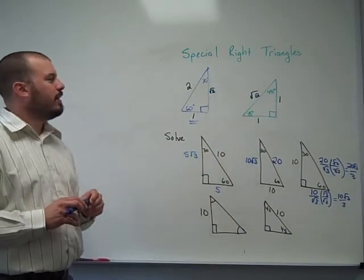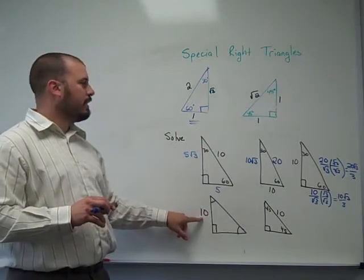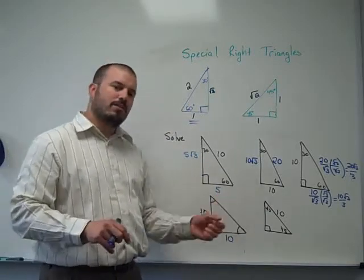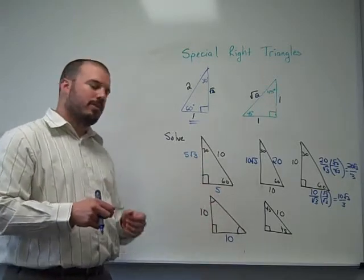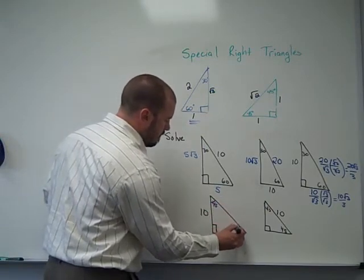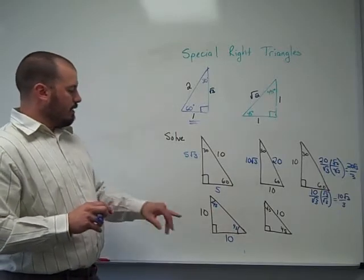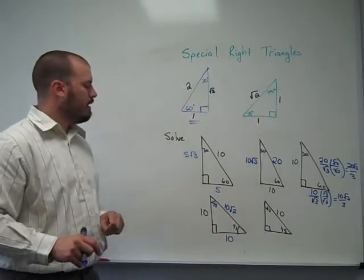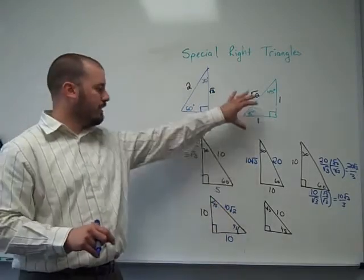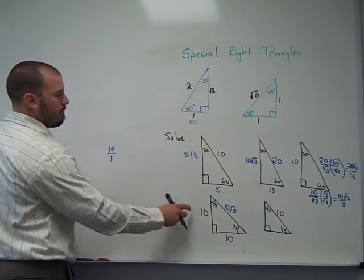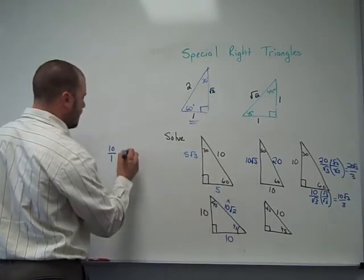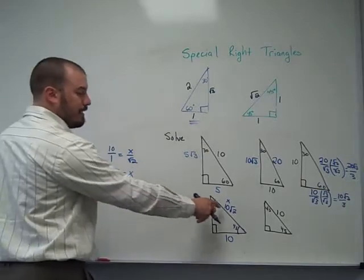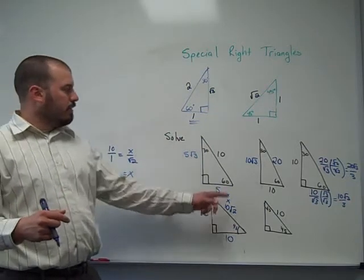Now for 45-45-90 triangles, the base triangle has sides 1, 1, and √2 for the hypotenuse. So if I know a leg is 10, the other leg is also 10 because it's isosceles. This is a 45-45-90 triangle — the equal legs tell me it's isosceles, so each acute angle must be 45°. The pattern is: a leg times √2 gives you the hypotenuse, so 10 times √2 gives us 10√2. We can verify this with proportions: 10 over 1 equals x over √2, giving x = 10√2.